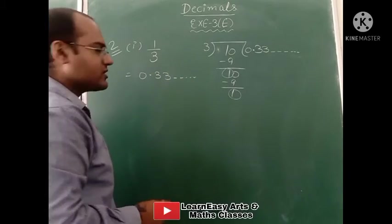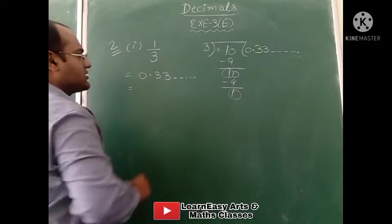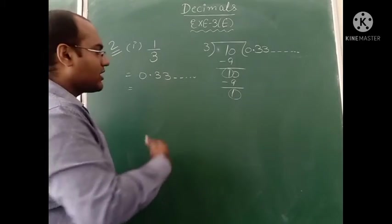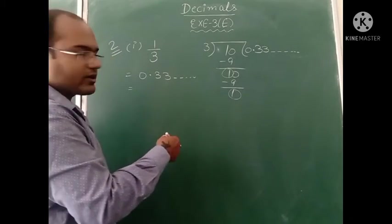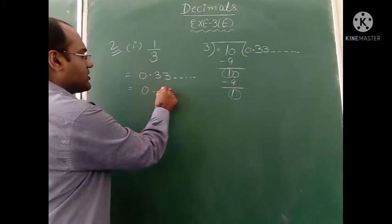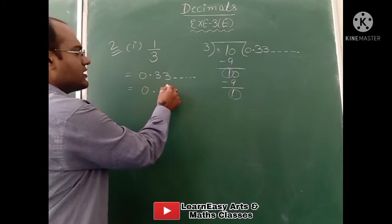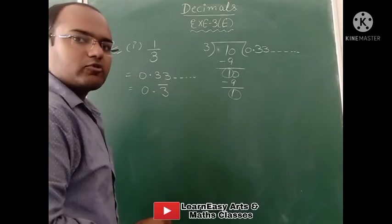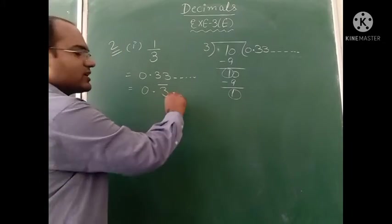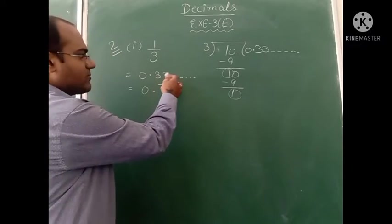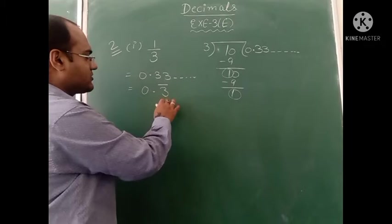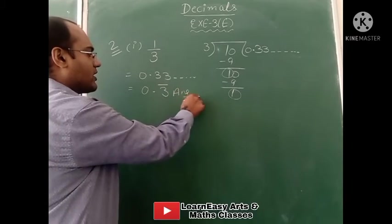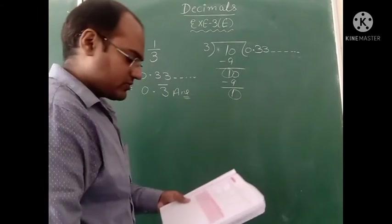It will go on repeating. Such answers are known as recurring decimal — recurring means repeating. Here which number is repeating? 3 is repeating. That's why on 3 we have to put a bar. Bar means repeat. So 3 is coming again and again, that's why we put bar on 3. This is your final answer of part number 1.